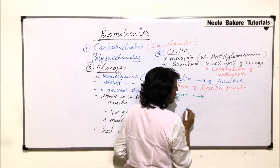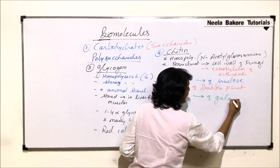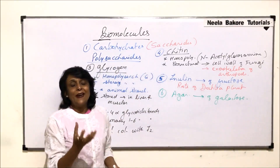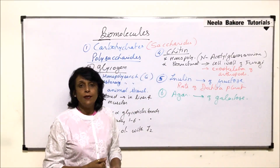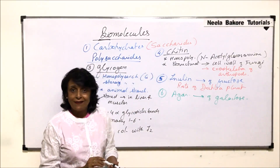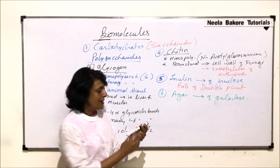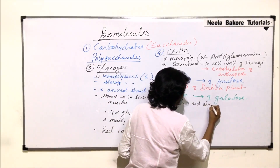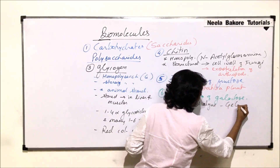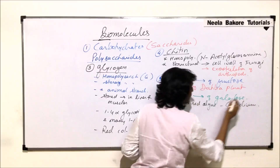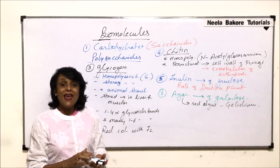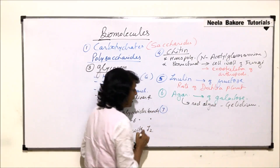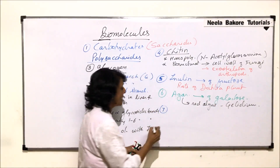The next polysaccharide is agar, also written as agar-agar. It is a homopolysaccharide made up of only galactose. It is used to thicken the nutritive medium for various types of culture techniques such as tissue culture. Agar is extracted from red algae like Gelidium.